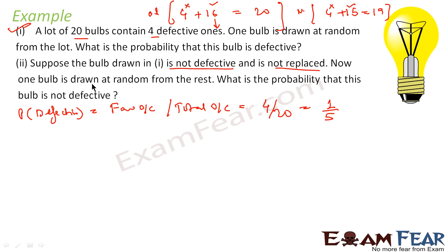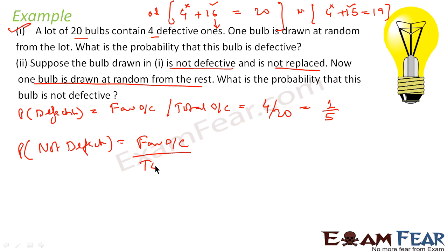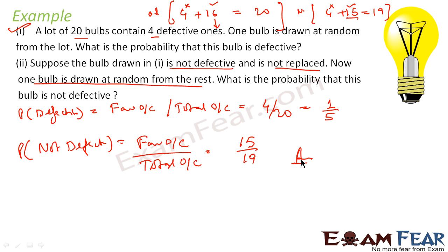Now one bulb is drawn at random from the remaining 19. We have to find the probability that this bulb is not defective. Using favorable outcome / total outcome: favorable outcome for not defective is 15 (there are 15 non-defective bulbs), and total outcome is 19. So the probability = 15/19. This is the result for the second draw, given the first draw was non-defective.